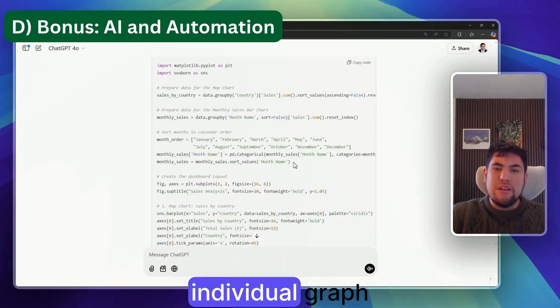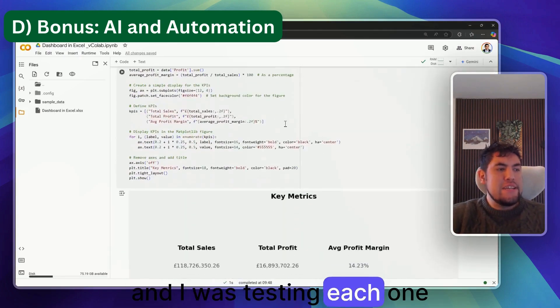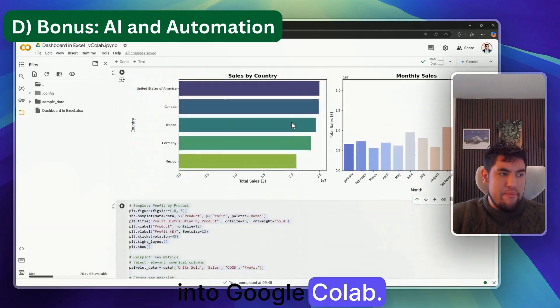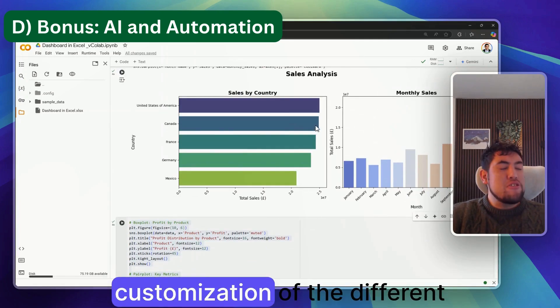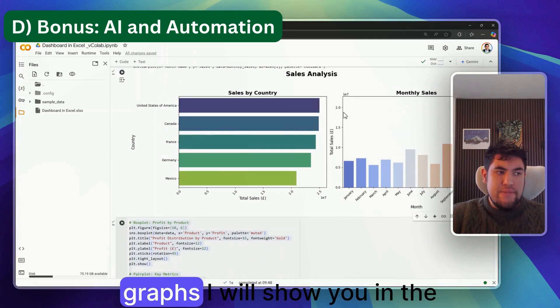One by one I asked it to generate the code for each individual graph, and I was testing each one into Google Colab.